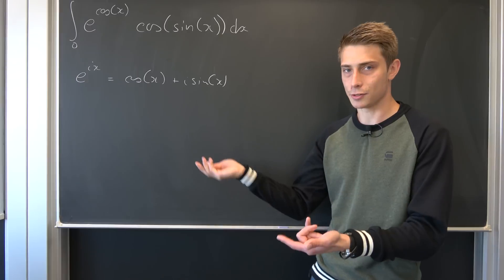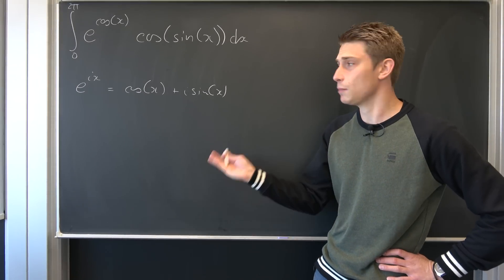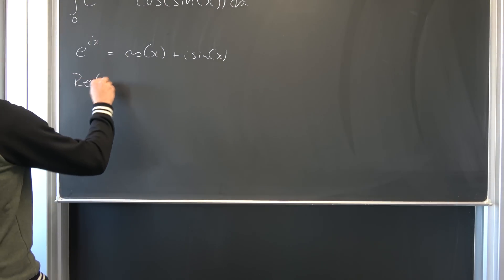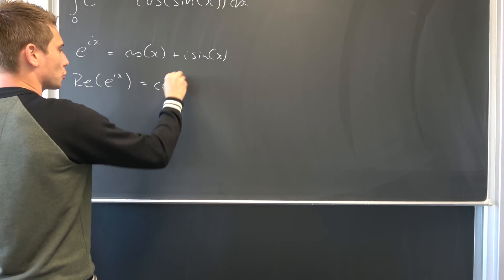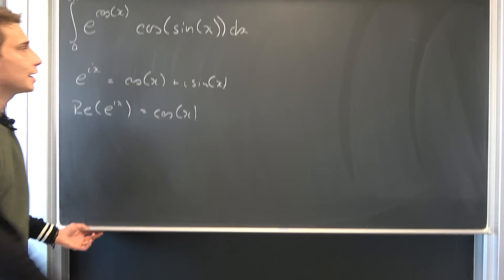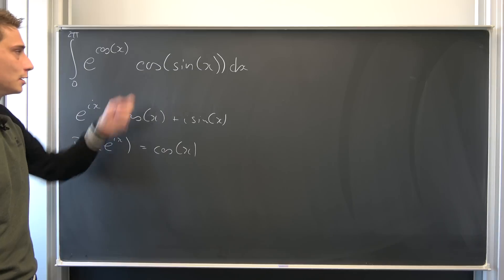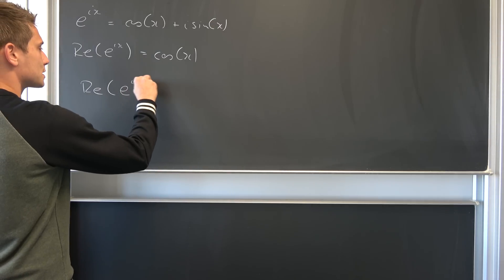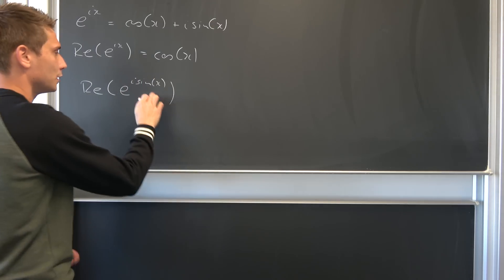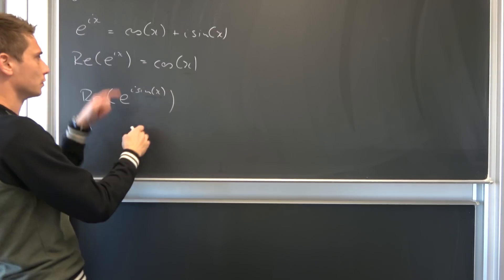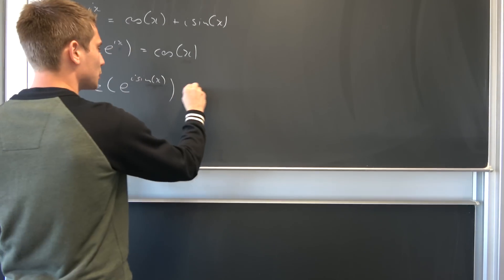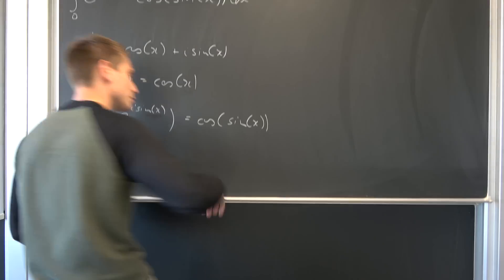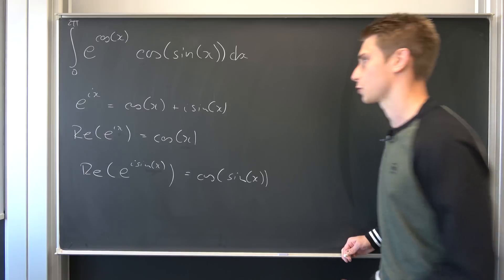We can use some operators on that, namely the real part operator. So if we take the real part of e to the i times x, this corresponds to the cosine of x. And we can make use of that because if we take the real part of e to the i times sine of x — where sine of x is our new argument — we end up with the cosine of sine of x.